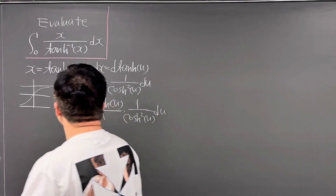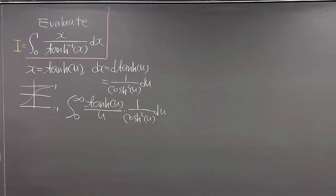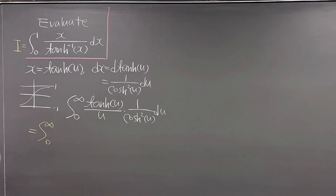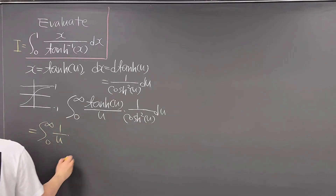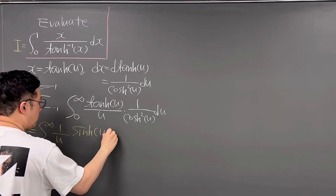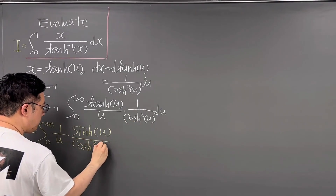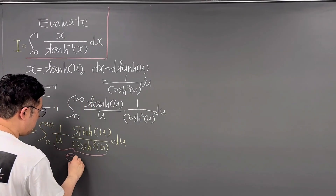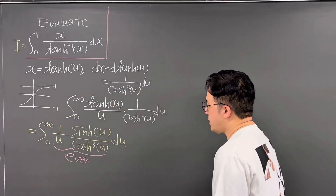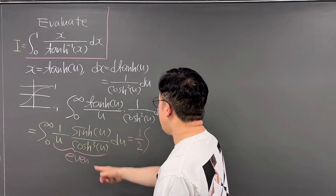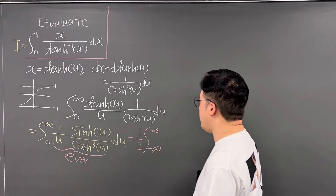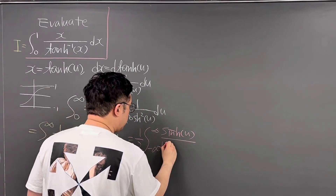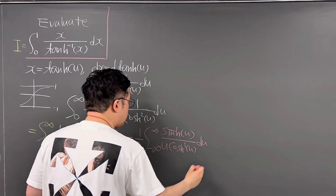Let's rewrite this again. Let me call this integral I. So if you rewrite this, it is just going to be the same as the integral from 0 to infinity of 1/u times sinh(u) over cosh³(u) du. Noticing that this integrand is an even function, we can rewrite this as 1/2 times the integral from negative infinity to positive infinity of sinh(u) over (u · cosh³(u)) du.